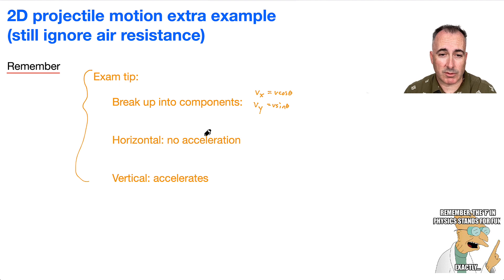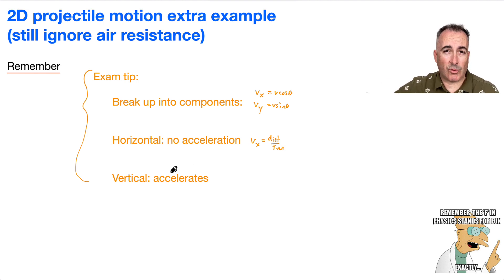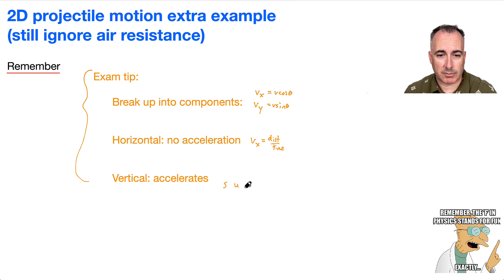In the horizontal direction — with Vx — because there's no acceleration in the horizontal world, that means we can say it's just distance over time: Sx over time. In the vertical world, it accelerates because gravity acts downwards. So because of that, we're going to use SUVAT. I like to put little subscript Y's on all those variables.